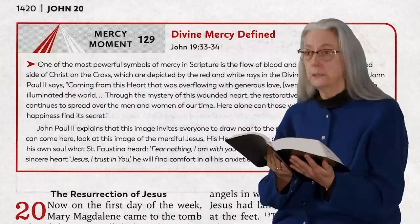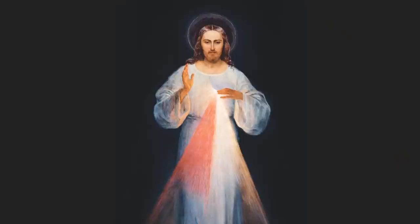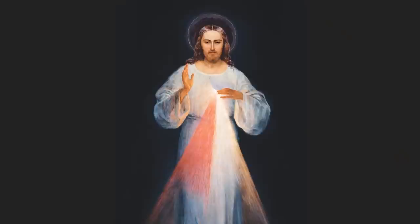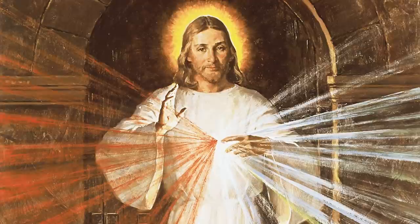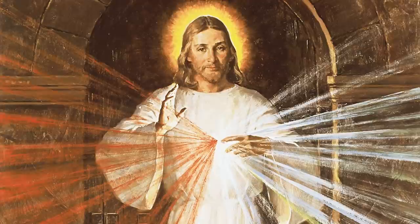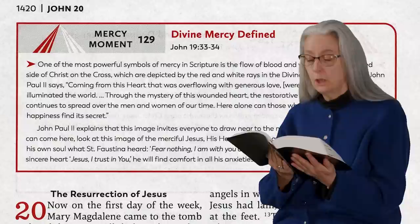One of the most powerful symbols of mercy in Scripture is the flow of blood and water from the pierced side of Christ on the cross, which are depicted by the red and white rays in the Divine Mercy image. As St. John Paul II says, 'Coming from this heart that was overflowing with generous love were two rays of light which illuminated the world.'